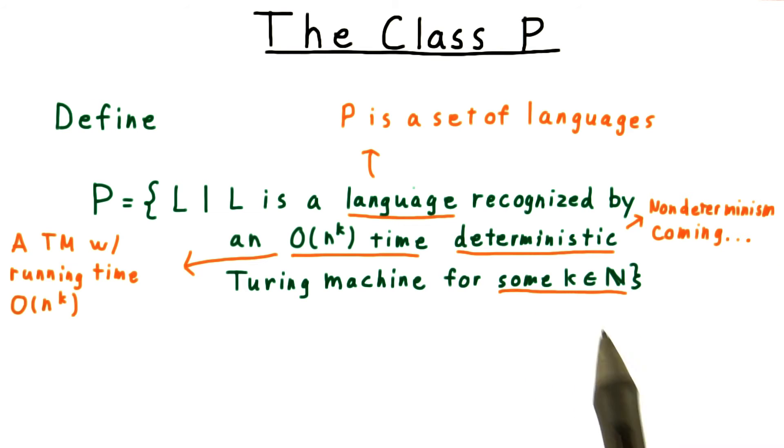This choice, however, does have some very nice properties. First, it matches tractability better than one might think. In practice, k is usually low for polynomial algorithms, and there are plenty of interesting problems not known to be in P.